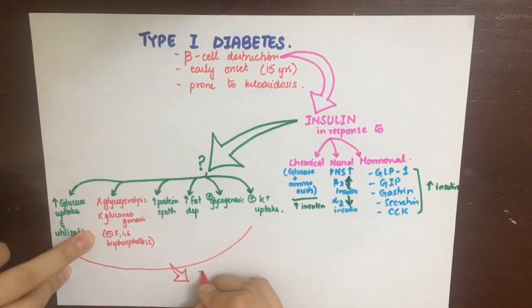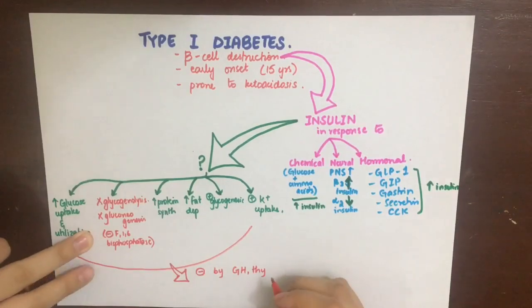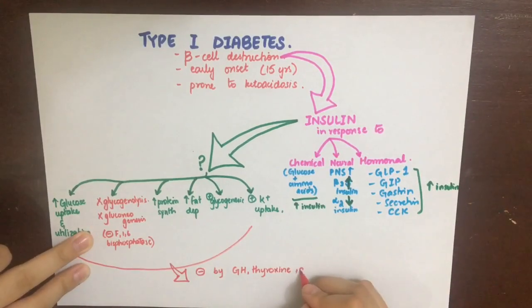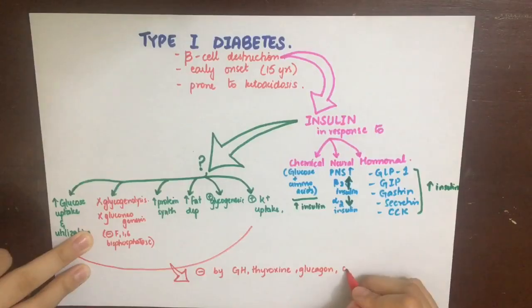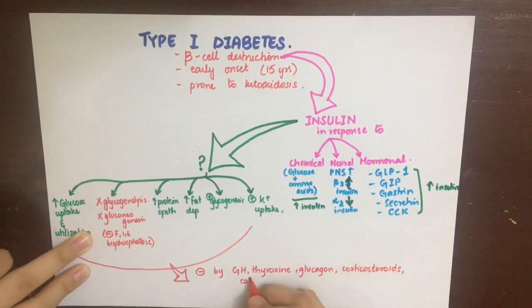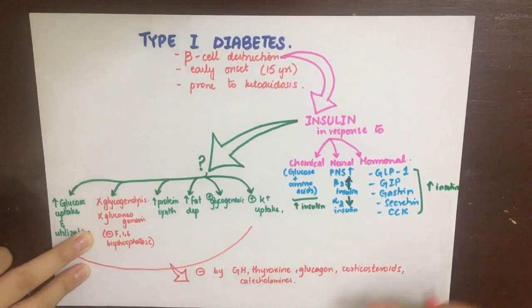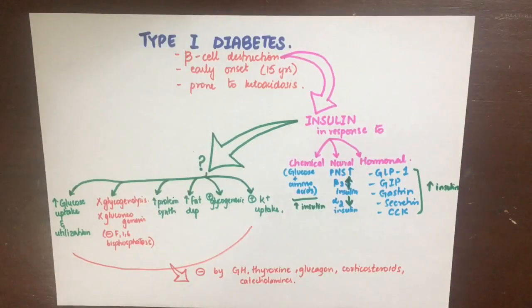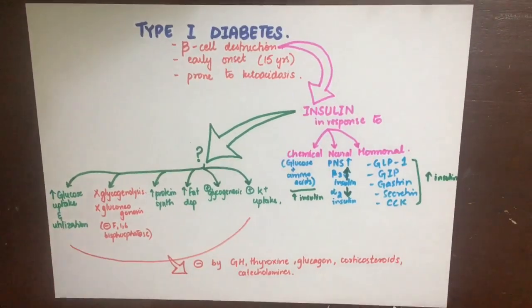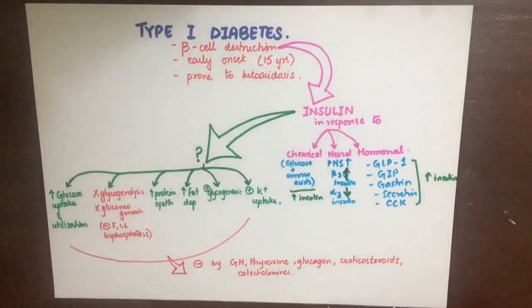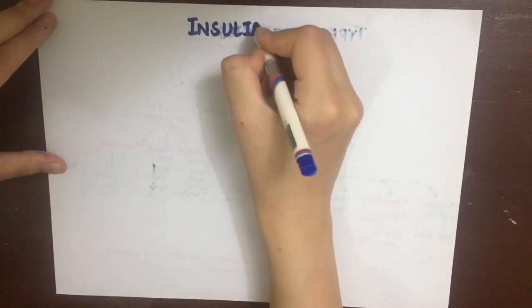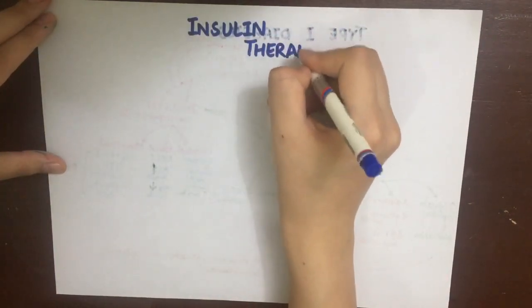All of these actions of insulin are antagonized by other hormones such as growth hormone, thyroxin, glucagon, corticosteroids, and catecholamines. Coming back to type 1 diabetes, the only problem in this disease is no insulin. So we can supplement insulin either by insulin preparations or by insulin analogues.